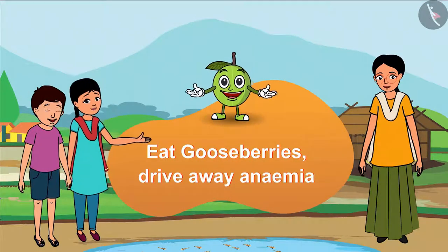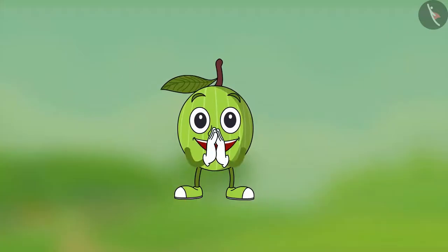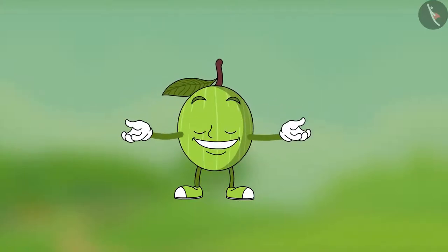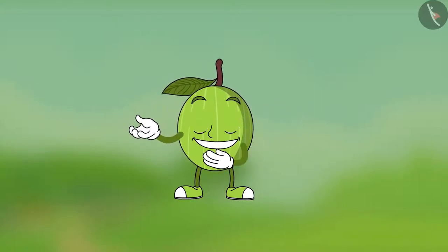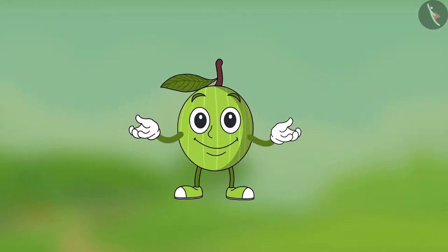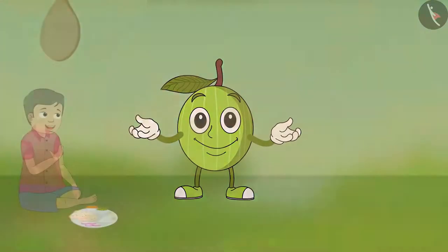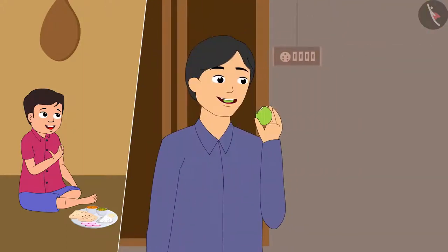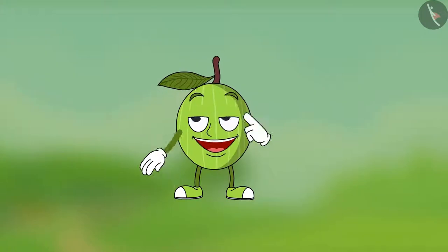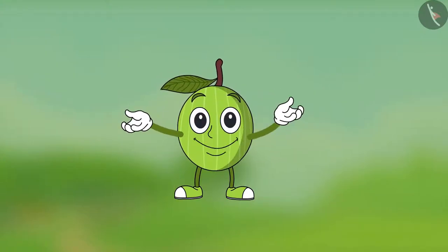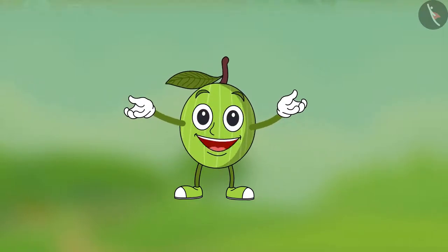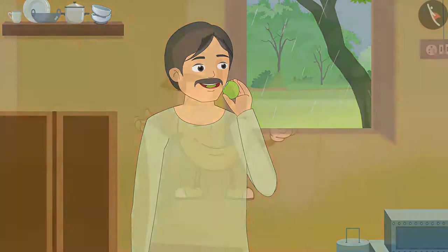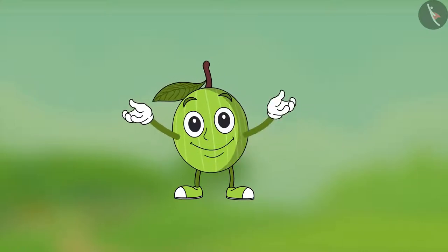Eat Gooseberries, Drive Away Anemia! Hello children, did you recognize me? I will give you a few hints. As you can see, I am slightly pale green in color and round in shape. People eat me as a vegetable and a fruit, and they make pickles out of me. I am available in all seasons. I am Amla!